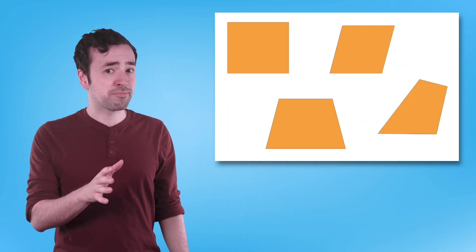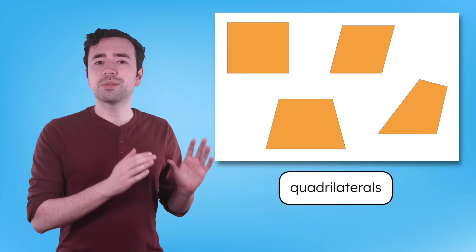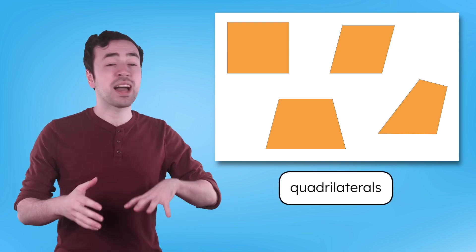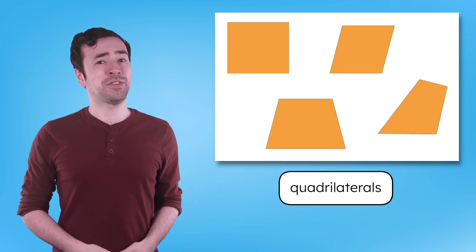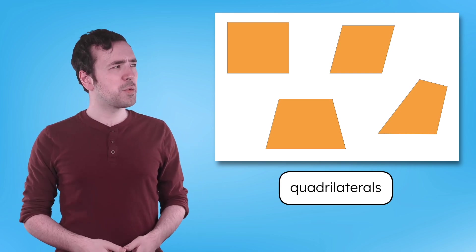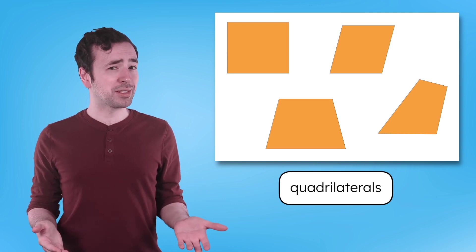But are all polygons with the same number of sides shaped exactly the same? Check out these polygons — they all have four sides, so they're all quadrilaterals, but they're all shaped a little differently. Some sides are longer, some are shorter, and the angles are different too. I wonder, can we make different versions of other polygons too? Let's find out!